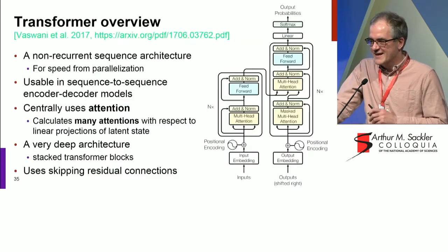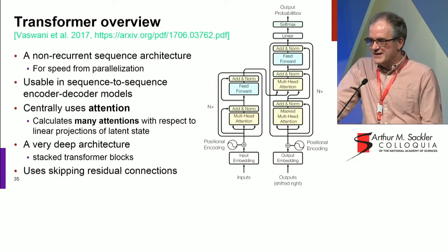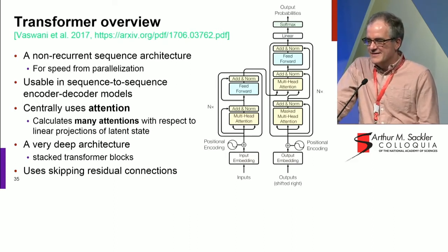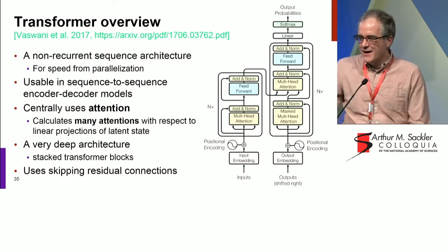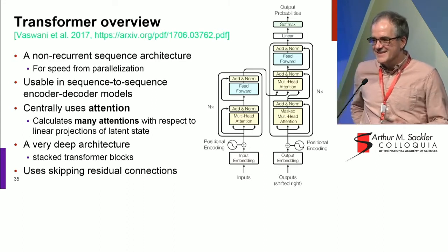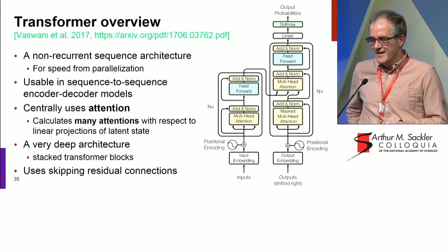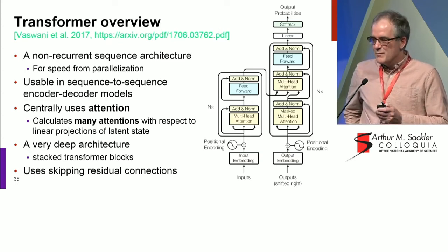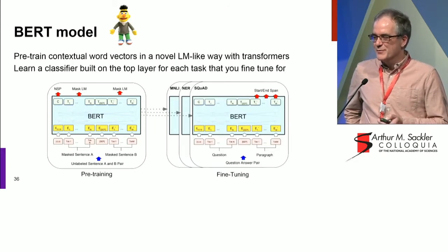The transformer architecture is an interesting alternative which I won't have time to cover fully today. Rather than having a recurrent network — which tends to be slow and is problematic — it replaces that with only using attention, reusing the same ideas. It makes use of a deep architecture vertically with skipping residual connections. Doing that works brilliantly well, and that led to a new model of language with contextual word representations using BERT.